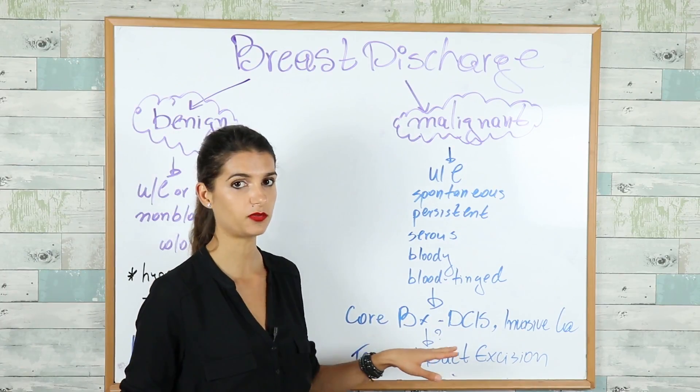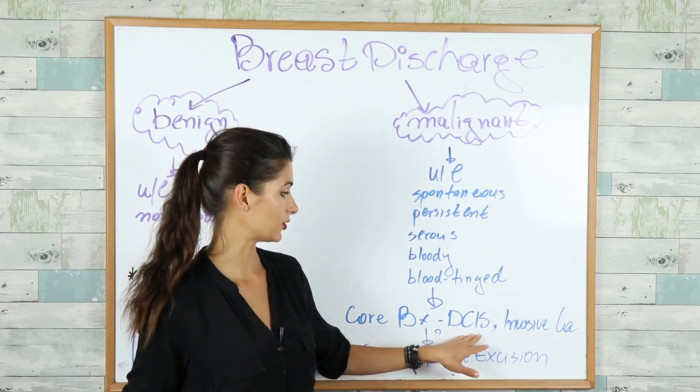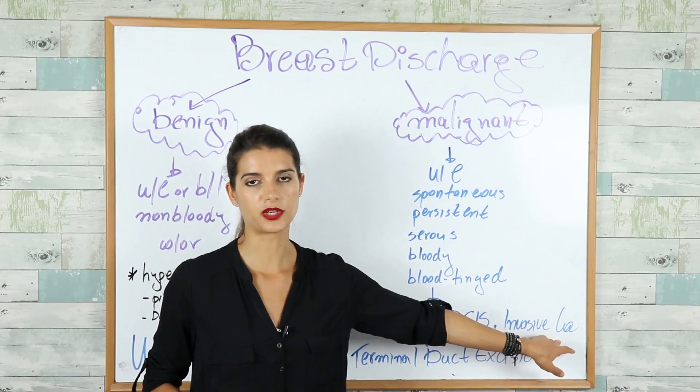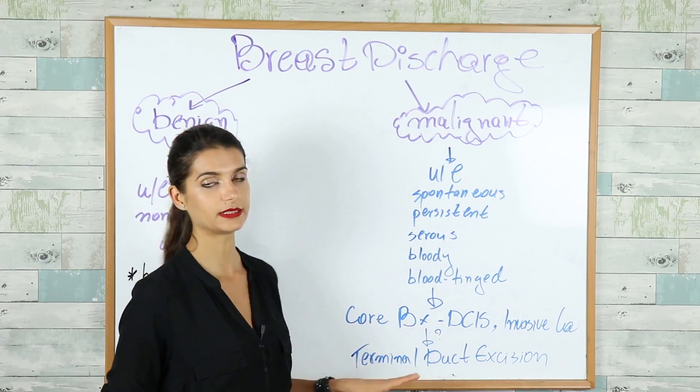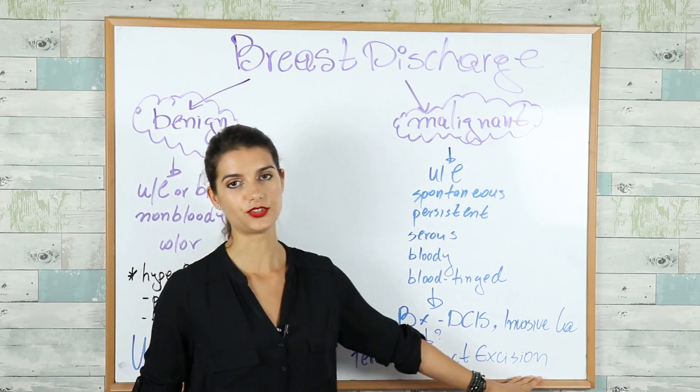So now what you have to do is core biopsy to check if you can find ductal carcinoma inside or invasive cancer which you have to treat with the appropriate surgery. But if the core biopsy is undecisive, you have to perform a terminal duct excision.